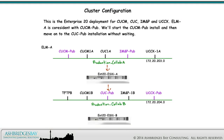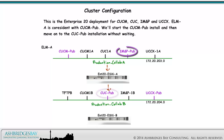This is the Enterprise 20 deployment for CUCM, CUC, IM&P, and UCCX. ELM-A is co-resident with CUCM Pub. We'll start the CUCM Pub install and then move on to the CUC Pub installation without waiting.